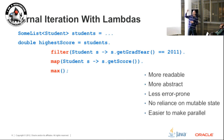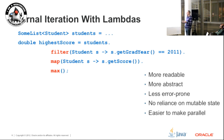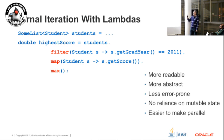We end up with much more readable code - much clearer on what we're doing. It's more abstract in terms of the code and how we're defining things. Less error-prone because there's less opportunity for typing things incorrectly. Still no reliance on mutable state, so we can decompose it more easily into parallel threads if we want to, and therefore it's easier to make parallel.